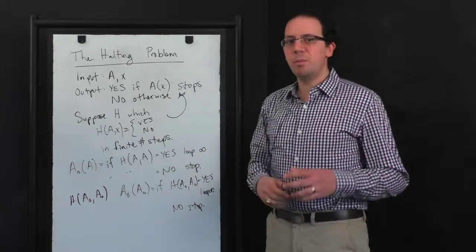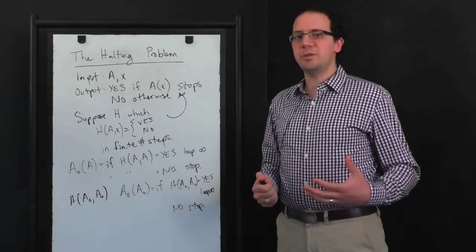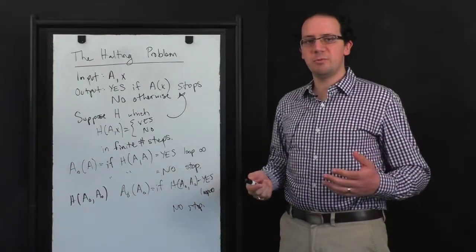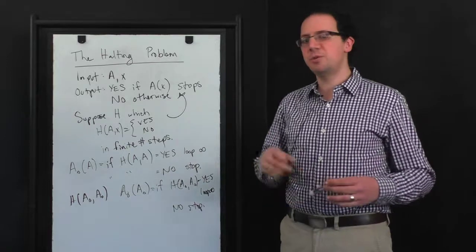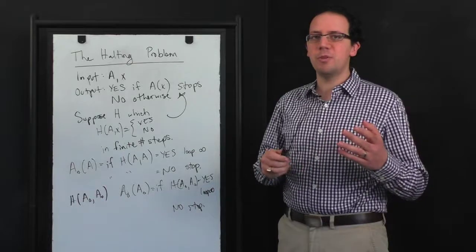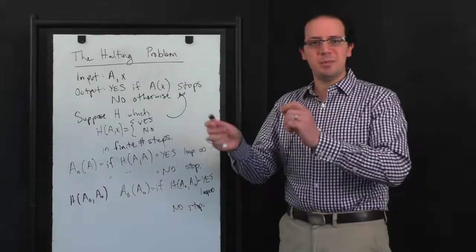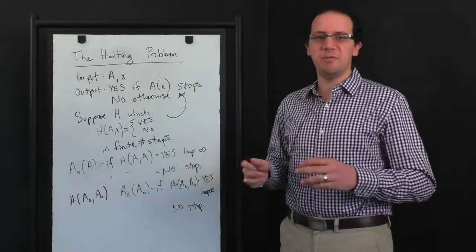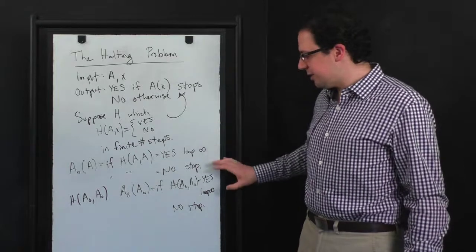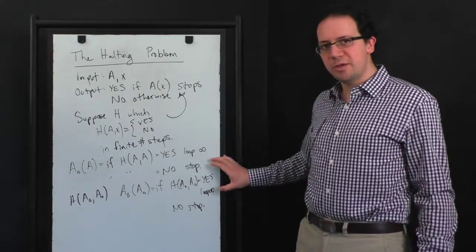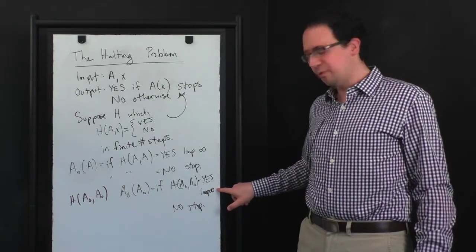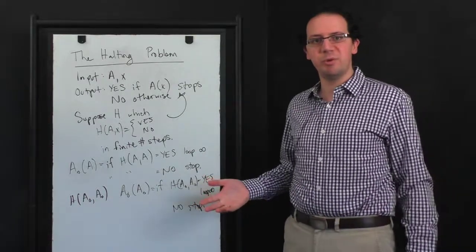The other thing to notice here is you might think that the reason the halting problem is hard is because when an algorithm doesn't halt, it can do it in crazy ways. A very simple way of not halting is you just enter an infinite loop and you do the same thing over and over again. But you could also have algorithms that never halt, but they do some crazy behavior that never, ever repeats itself and, you know, is totally unpredictable. That actually is not the problem here. Notice that the algorithm that we constructed where H gets it wrong just has a very simple looping behavior. I just said loop forever by which I meant enter some simple infinite loop.